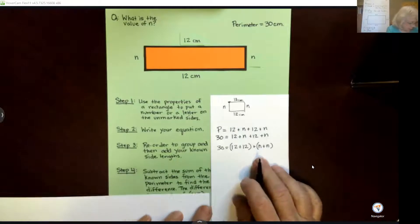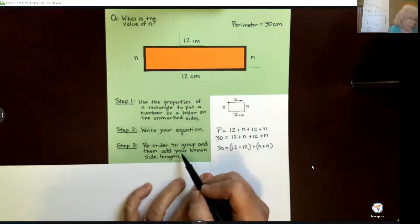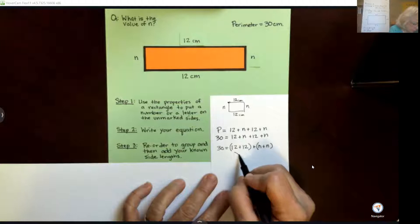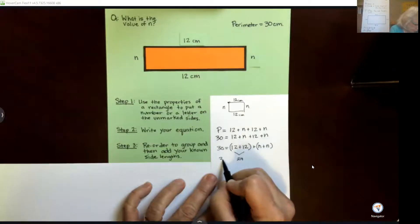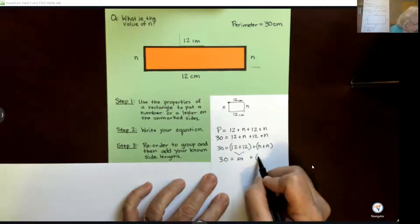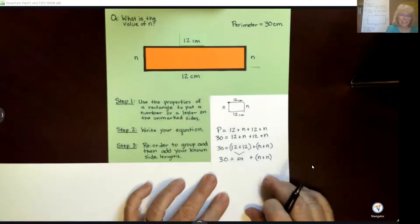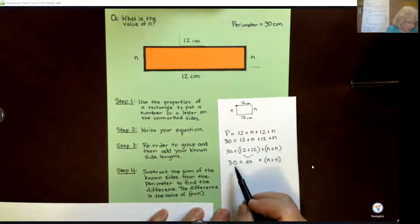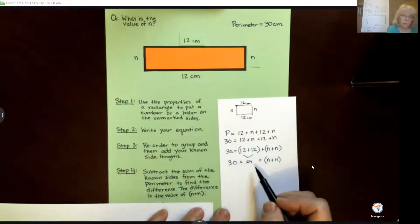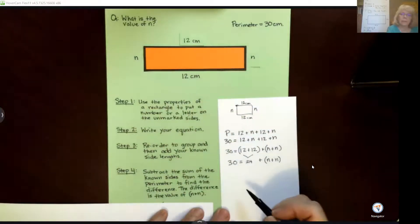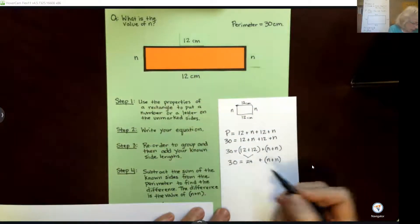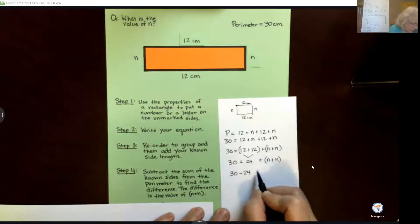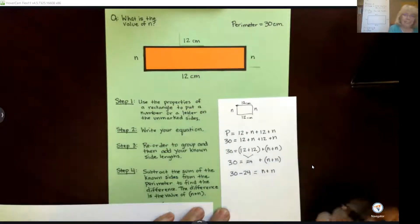All right, our next step is to, as part of this, we need to add this known side length. So we have 12 plus 12 which is 24. So we really have 30 equals 24 plus n plus n. Right? So now we go on to our subtraction part. In order to find the difference between 30 and 24 of this total length, we're going to subtract the sum of the known sides from our perimeter. So we say 30 minus 24 is equal to n plus n still.